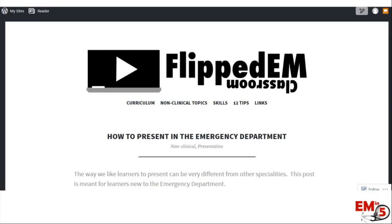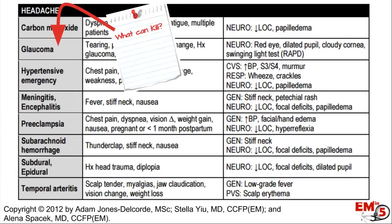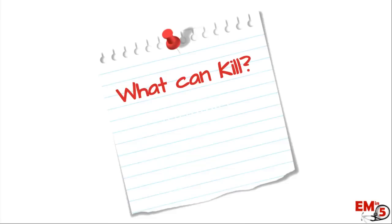There are a lot of different resources out there to help you create that list. For example, Flipped Classroom came up with a great resource — they have a bunch of different chief complaints and then different 'what can kill' diagnoses. I put a link to this PDF at the end of the talk. You can also look these things up in any basic emergency medicine textbook.